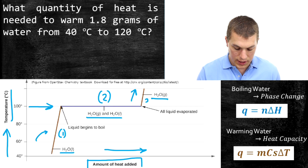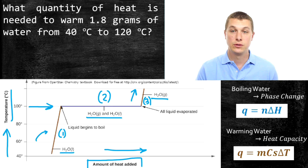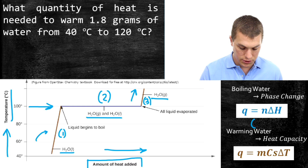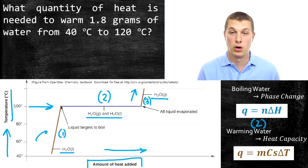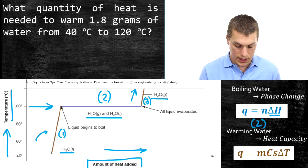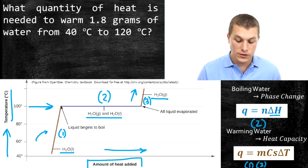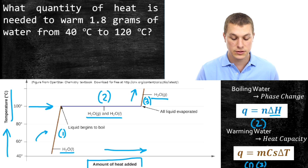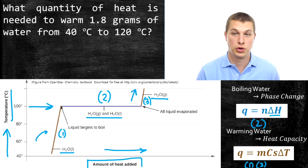The first and third stages are heat capacity problems — we're increasing the temperature. The second phase, where it's flat, is a phase change where we're just boiling water. For the boiling step, we use the phase change equation: heat equals moles times delta H. For the heating stages, we use the heat capacity equation. This makes these problems a little challenging because we have to break up the calculation into different parts — both phase change calculations for the boiling part and heat capacity for the heating parts.